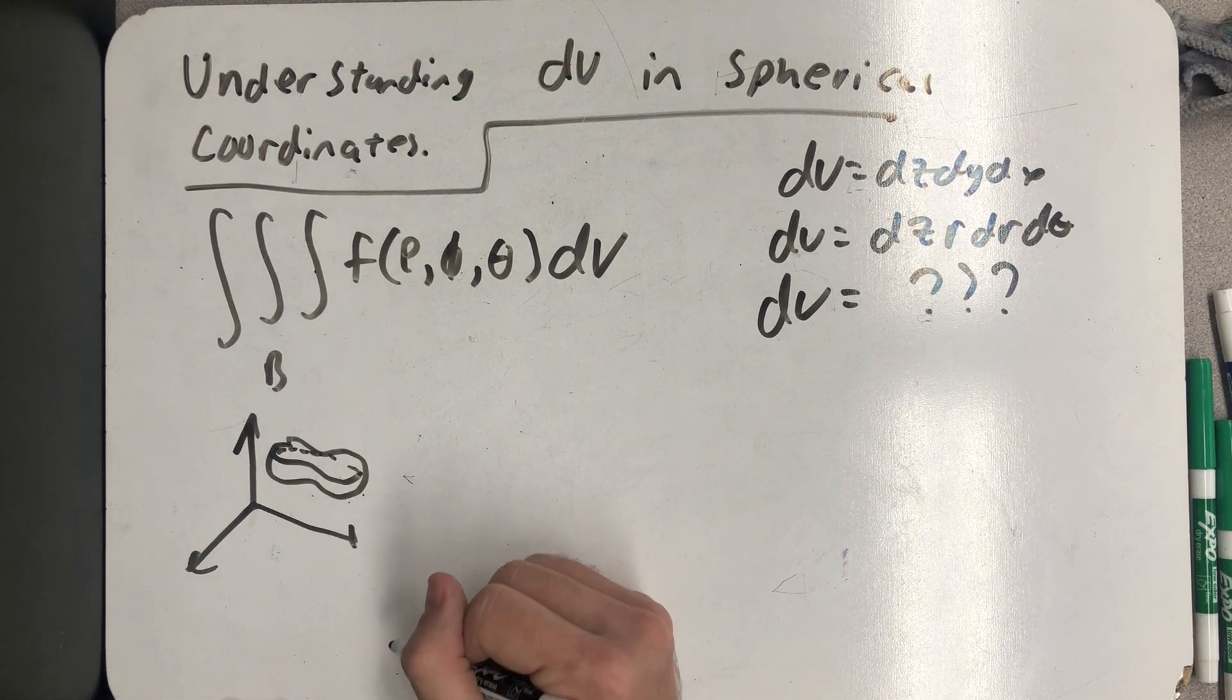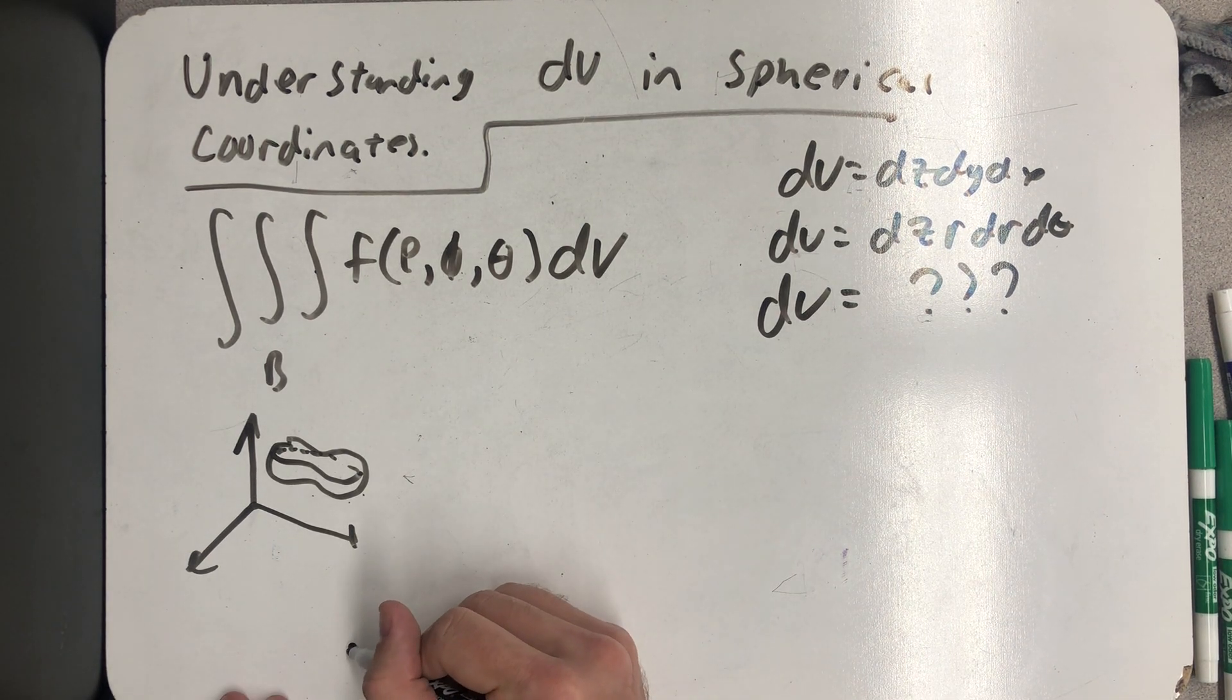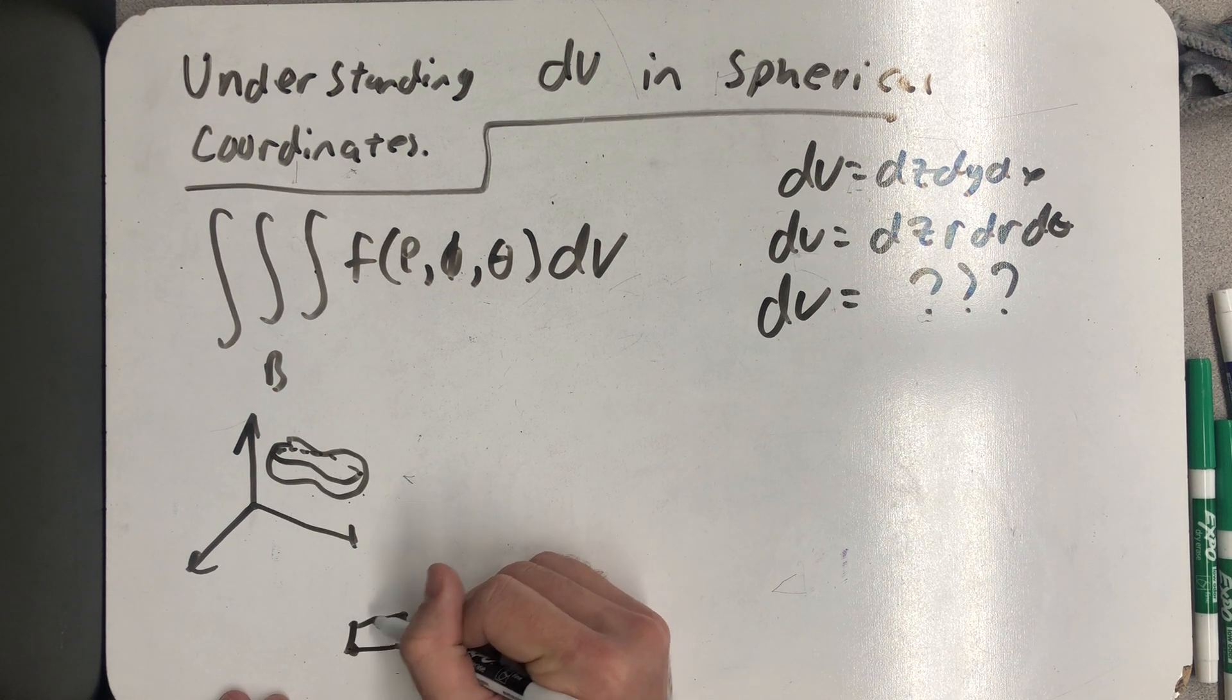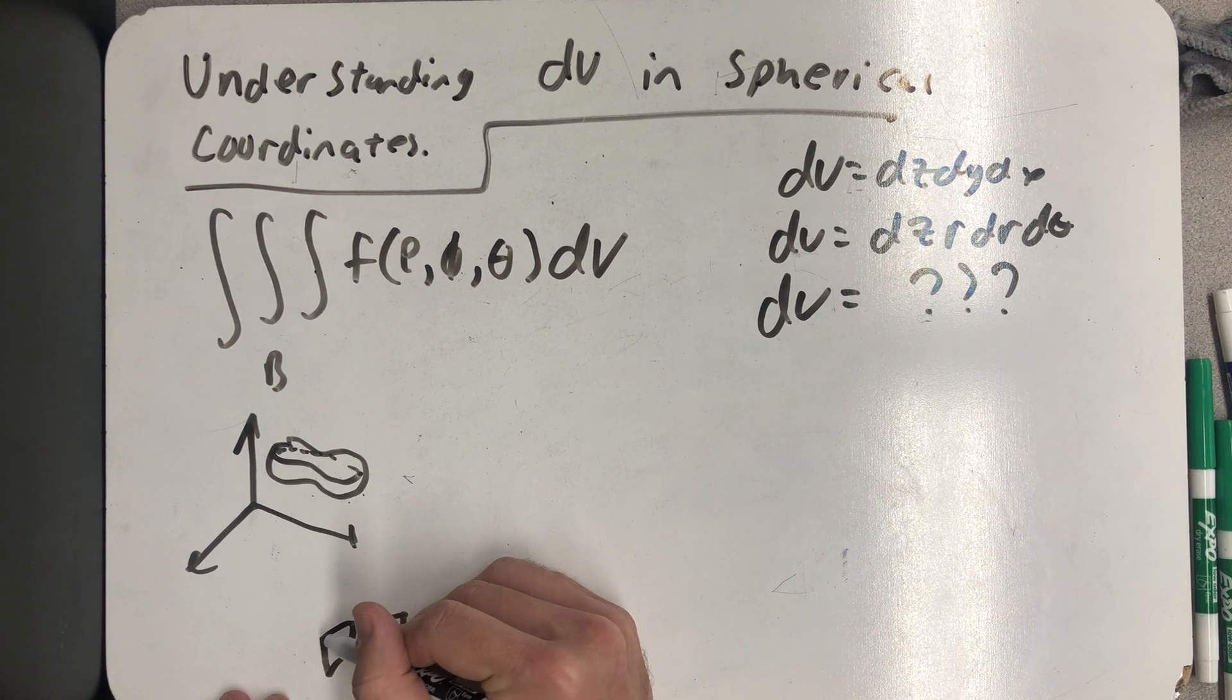In space, a Δx, a Δy, and then add a Δz and we get a rectangular prism.